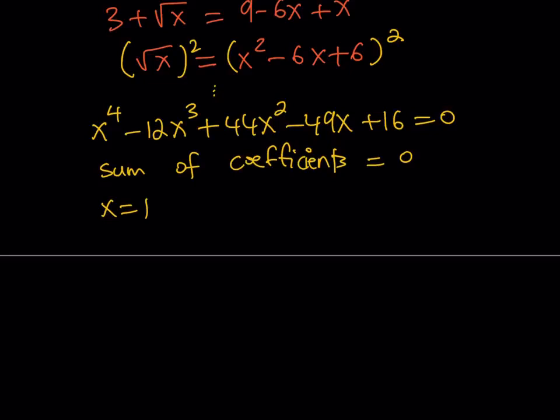Okay, so we can just divide by x minus one, and again, I'm going to save you some time here, spare you the trouble, and when we do divide by x minus one, we get x cubed minus 11x squared plus 33x minus 16. So now this is equal to zero, and obviously x equal one is a possible solution.